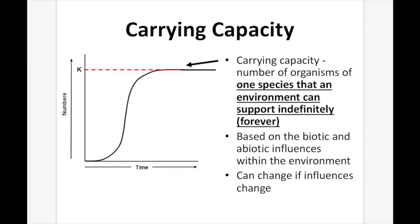Carrying capacity is the number of organisms of one species that an environment can support indefinitely. It's based on the biotic and abiotic influences within the environment, and can change if those influences change. For example, the carrying capacity of a prey species depends on the number of predators. If you increase predators, the environment can support fewer prey — so the graph shifts lower. If you remove those predators, the graph shifts higher, sustaining more prey.